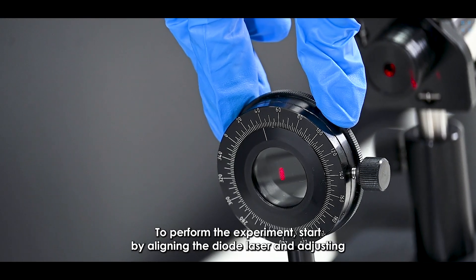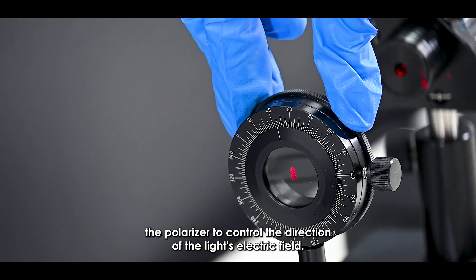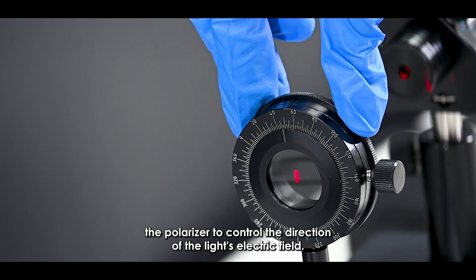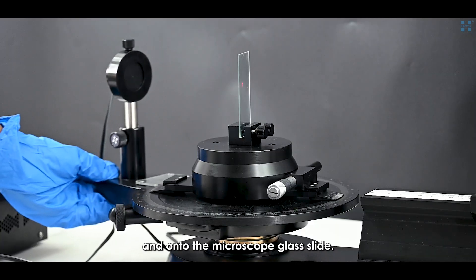To perform the experiment, start by aligning the diode laser and adjusting the polarizer to control the direction of the light's electric field. Direct the laser beam through the polarizer and onto the microscope glass slide.